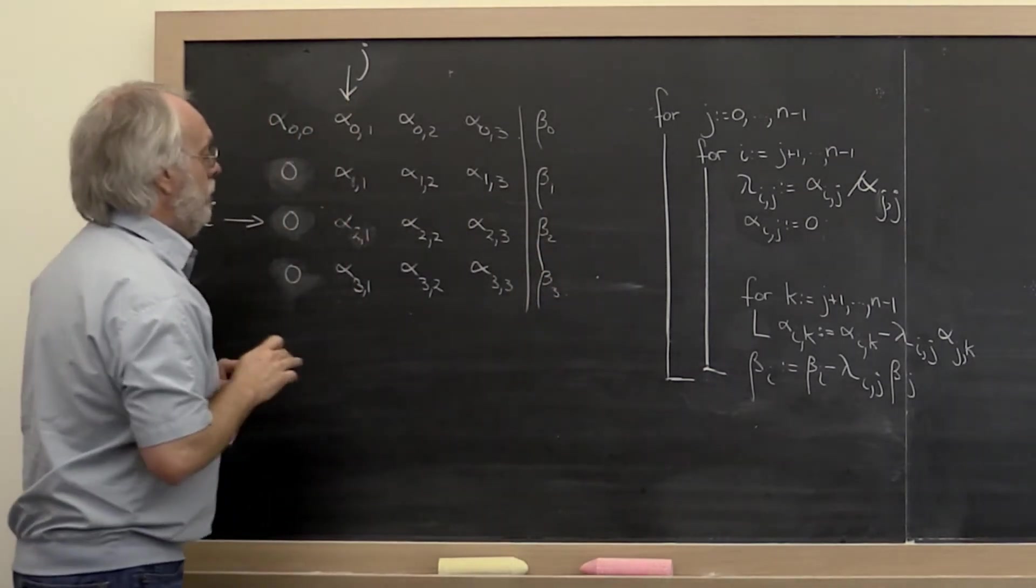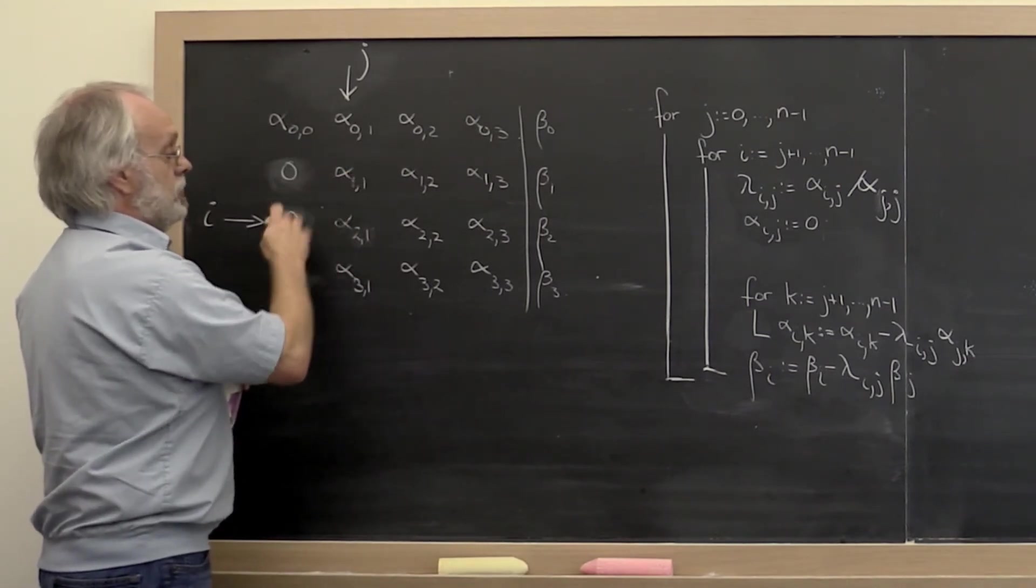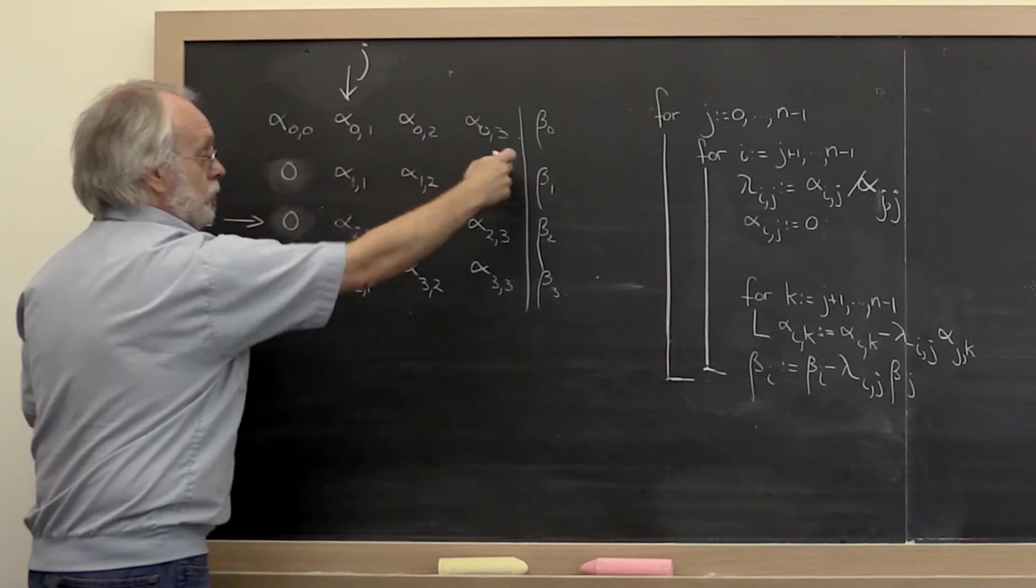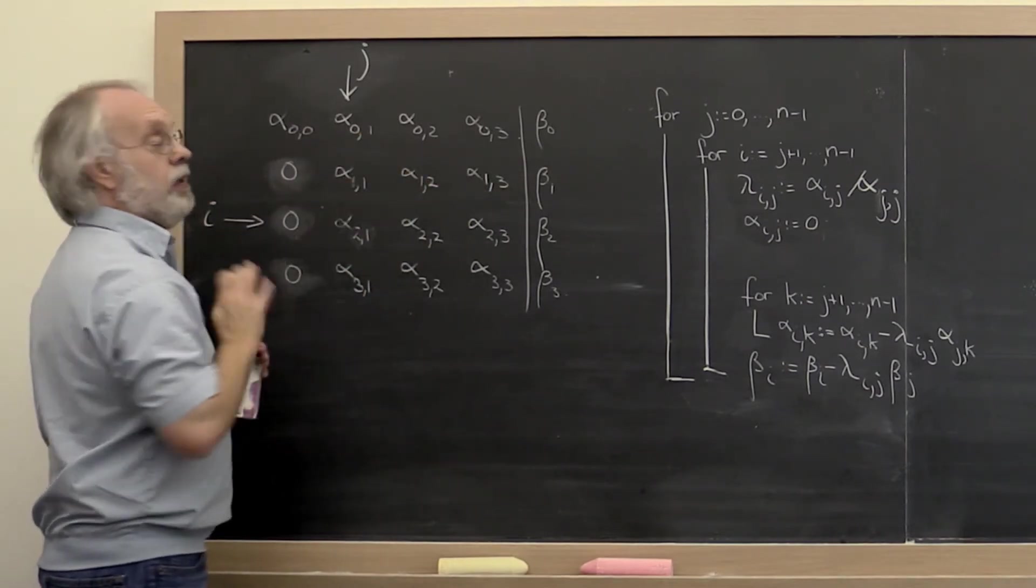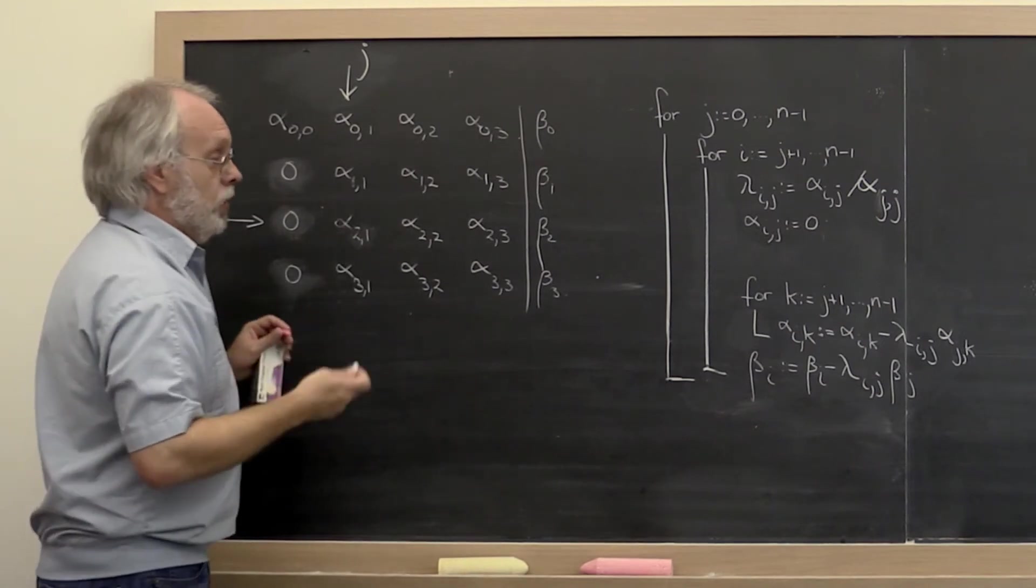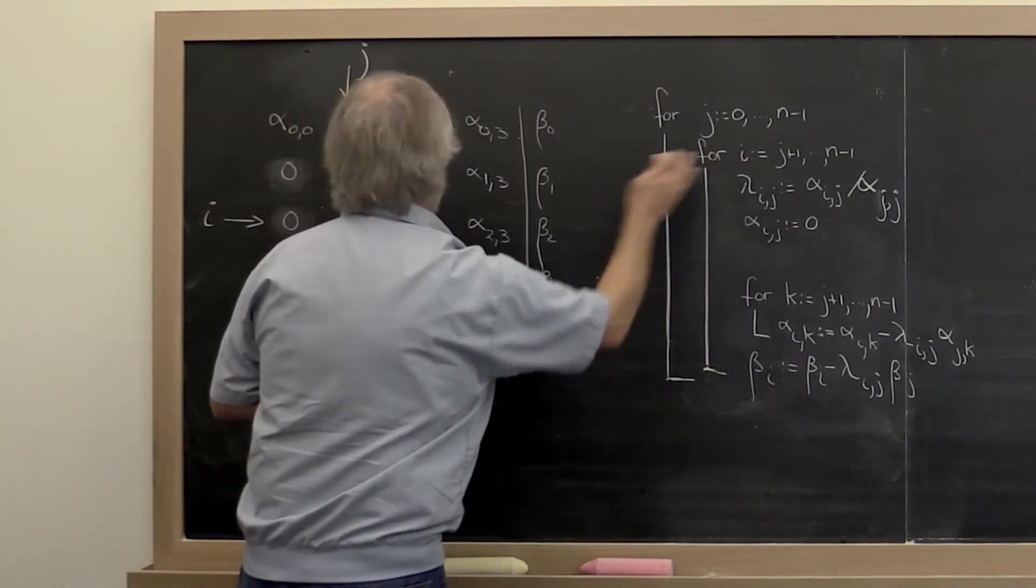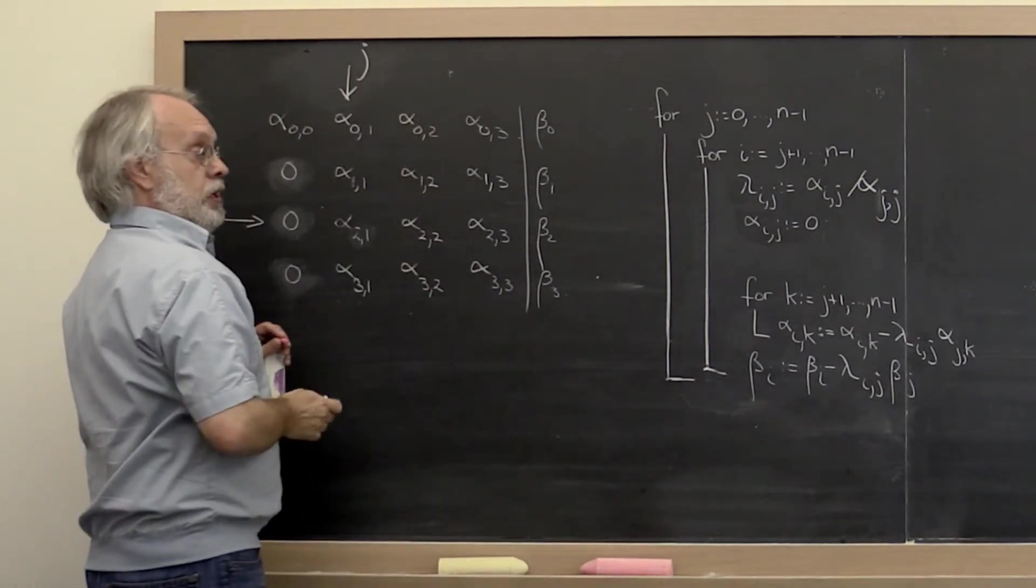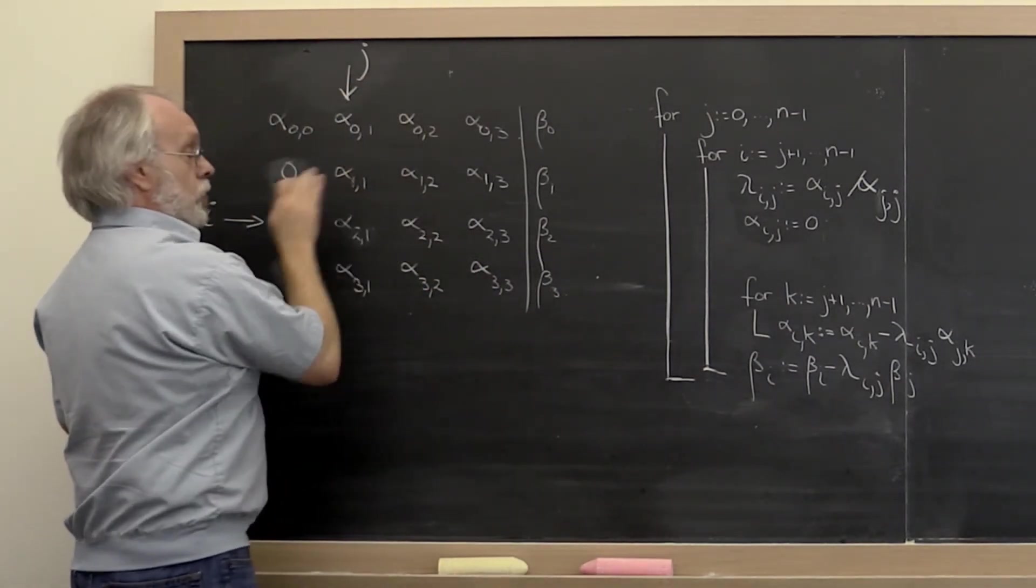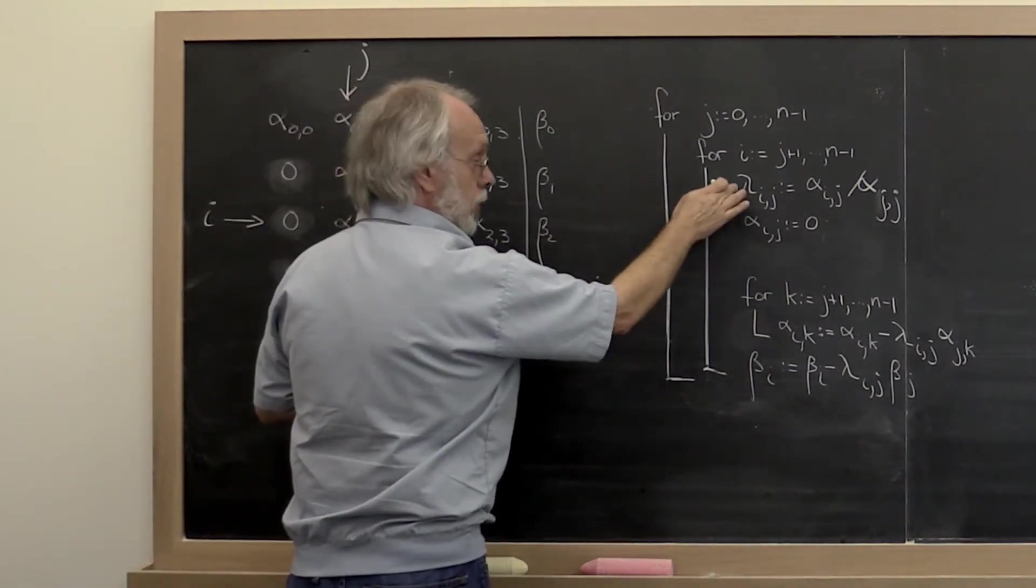That multiplier, if you think about it, is equal to alpha_2,1 divided by alpha_1,1. Because if you take that, multiply it times the current row and subtract it off, then you end up introducing a zero there. So we have a loop so that the index I sweeps over all of the rows below the current diagonal element, and there we compute a multiplier.